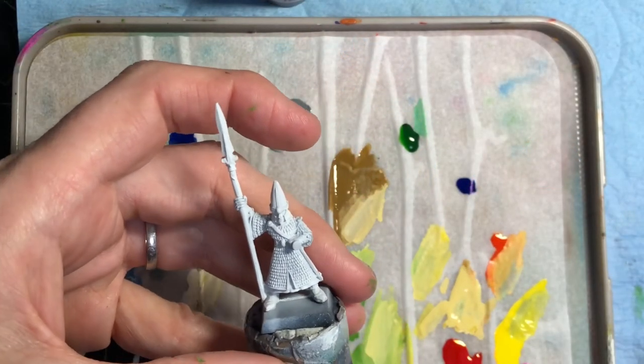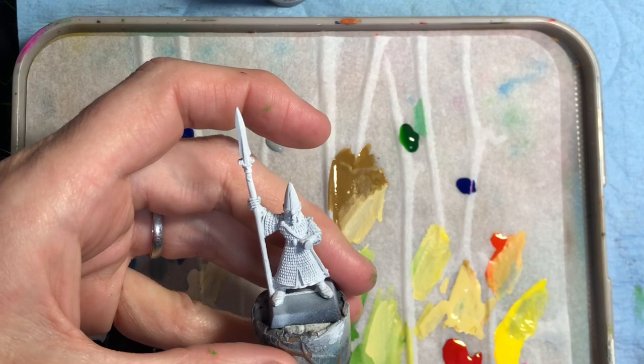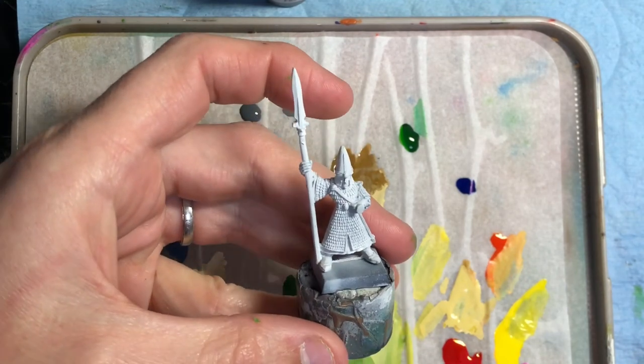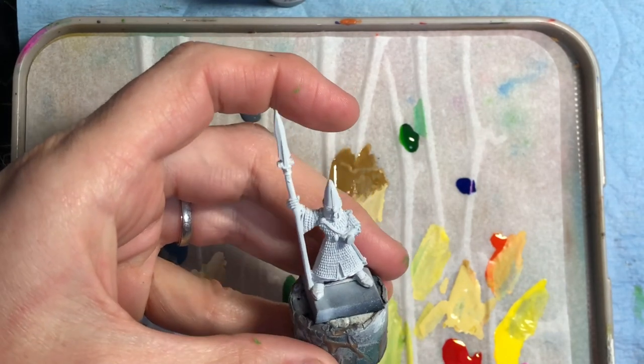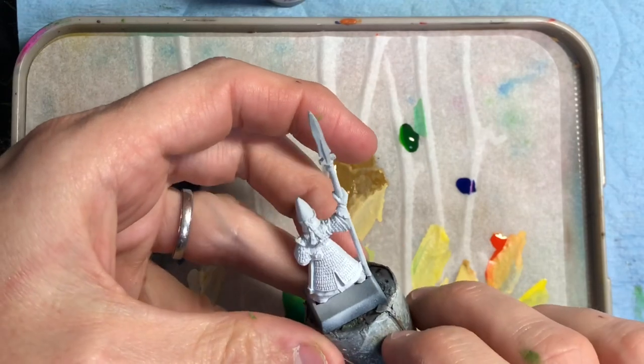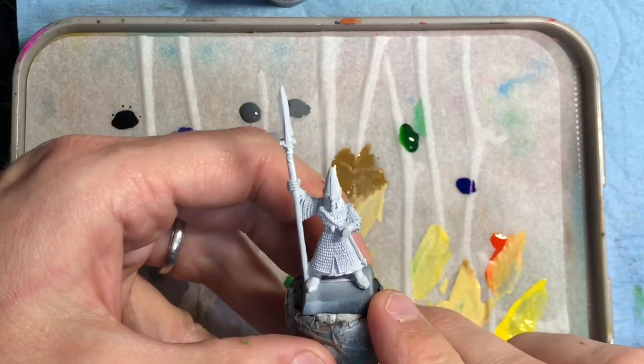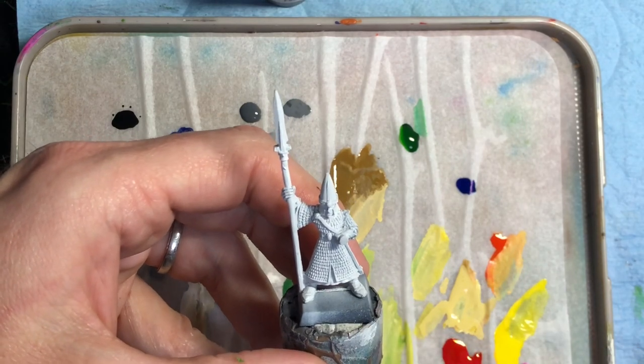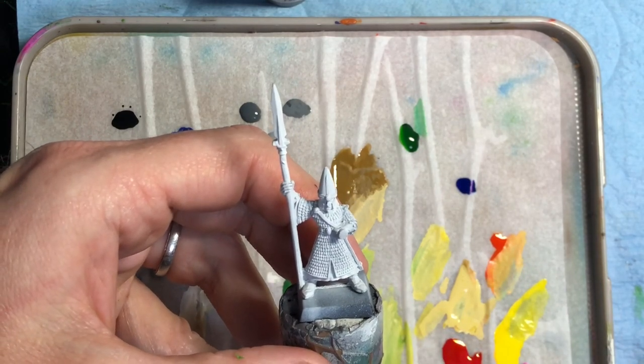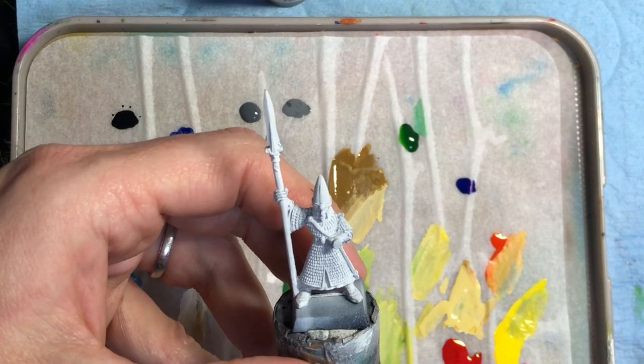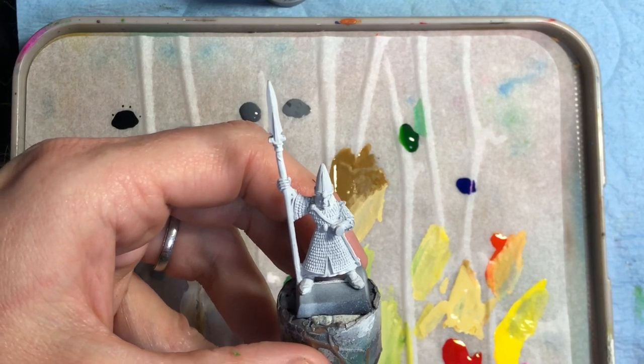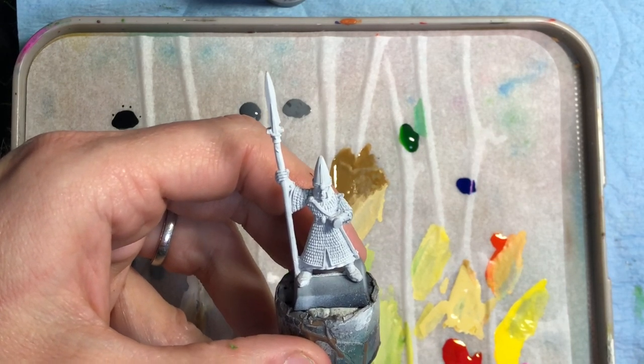Hey guys, back again with another quick video. This time I'm switching it out from Gawfang to a High Elf Spearman. Now the Spearman is a metal model, really beautifully designed actually. Jez did these back in the day when the fourth edition box set was released and they released a set of three Spearmen. I think it was four Bowmen in metal.